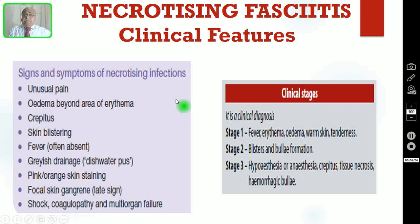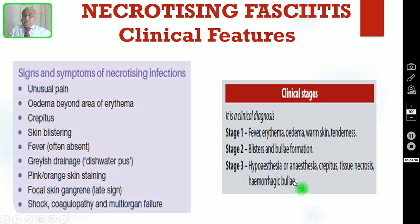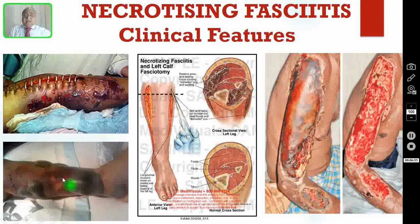This clinical picture occurs in three stages — and this diagnosis of necrotizing fasciitis is a clinical diagnosis. In Stage 1, the patient will have only fever, erythema, edema, warm skin, and tenderness. In Stage 2, the patient will develop blisters or bullae formation. In Stage 3, there will be hypoesthesia, anesthesia, crepitus, tissue necrosis, and hemorrhagic bullae, eventually with ulceration.